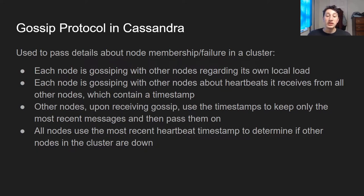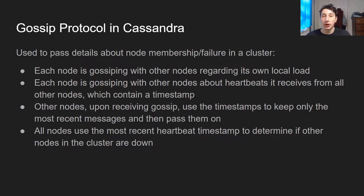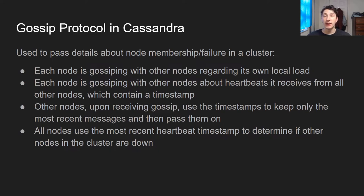Other nodes upon receiving the gossip will use those timestamps to basically say: node 1 received a heartbeat at 12 o'clock, but node 2 received a heartbeat from this other node at 1 o'clock, so I'll keep the 1 o'clock timestamp — that's the most recent anyone's ever heard from that node. Each node holds on to that timestamp locally to try and guess if that node is still up or not. So if all of the nodes are assuming that a node is down because no one's received a heartbeat from it in say an hour, then eventually they'll stop sending writes to it.